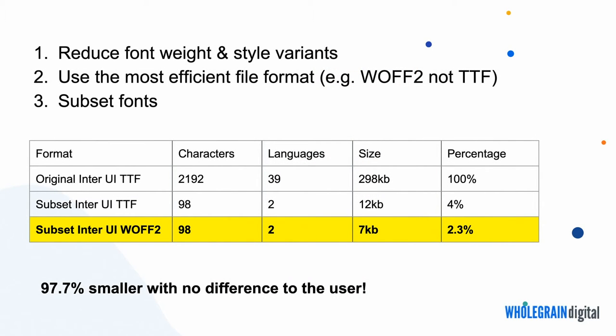On our website we use Inter UI but only one weight for headings. You can also convert the file format from TTF to WOFF2, which makes a huge difference in file size. You can also subset fonts — we don't need 2,192 characters on an English-only website, so we stripped out everything we'd never need and got it down to 98 characters covering two languages. The file size is now 7 kilobytes, saving nearly 98% off the original 300 kilobyte file — and no one will ever notice because we're just not loading characters we were never going to use.